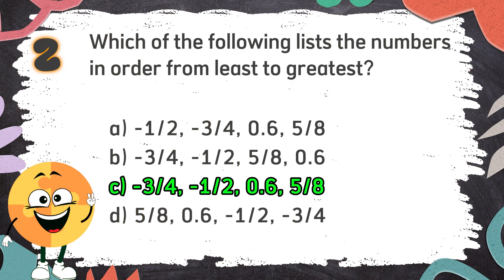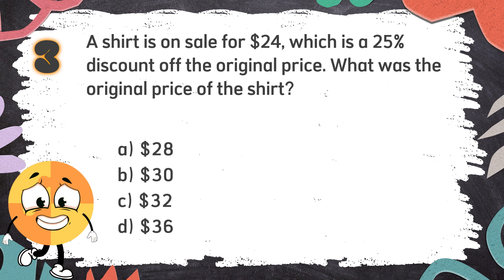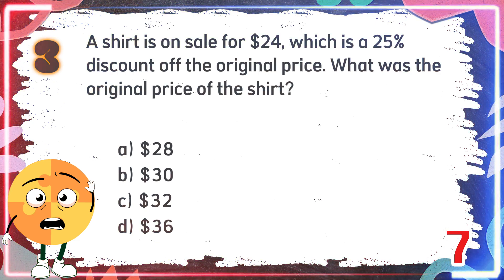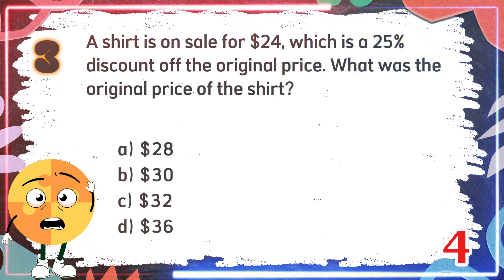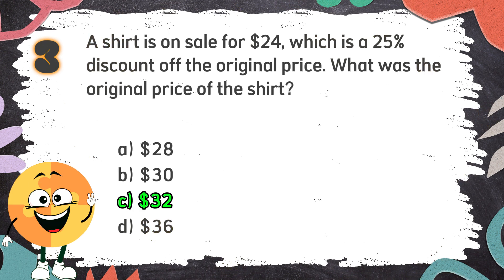Negative 3 fourths, negative 1 half, 0.6, 5 eighths. Number 3: A shirt is on sale for $24, which is a 25% discount off the original price. What was the original price of the shirt? Again, a shirt is on sale for $24, which is a 25% discount off the original price. What was the original price? The choices are: A. $28, B. $30, C. $32, D. $36. The correct answer is C. $32.